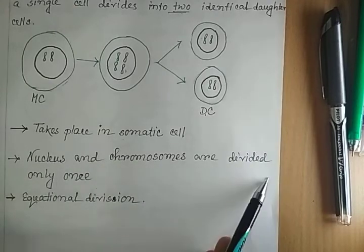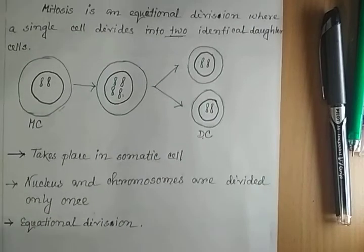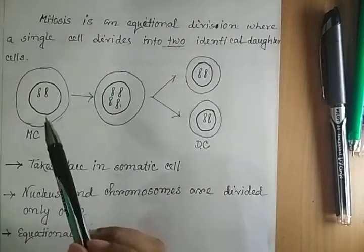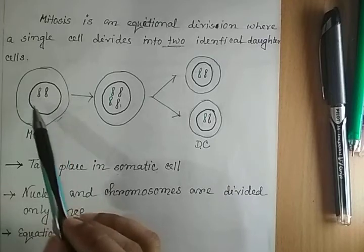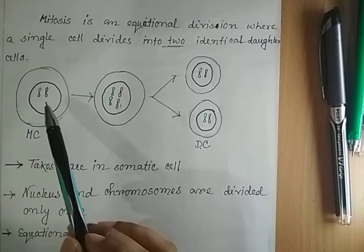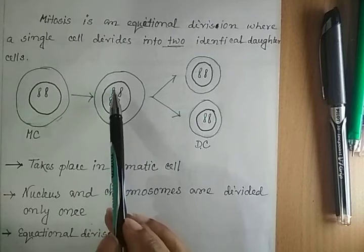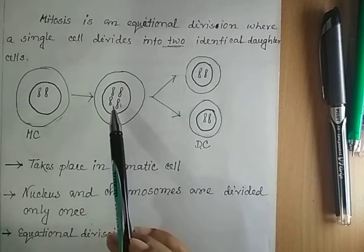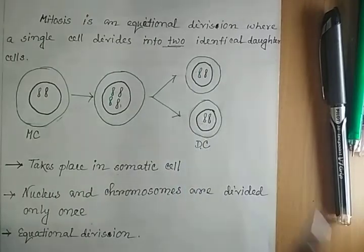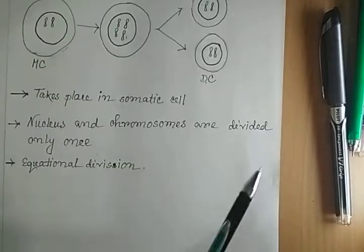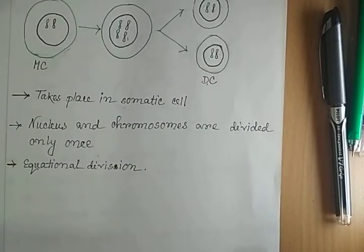During mitosis, the nucleus and chromosomes are divided only once. During this process, the genetic material, that means the chromosomes of the mother cell, is duplicated and gets separated into two daughter cells. That is why this type of cell division is known as equational division.